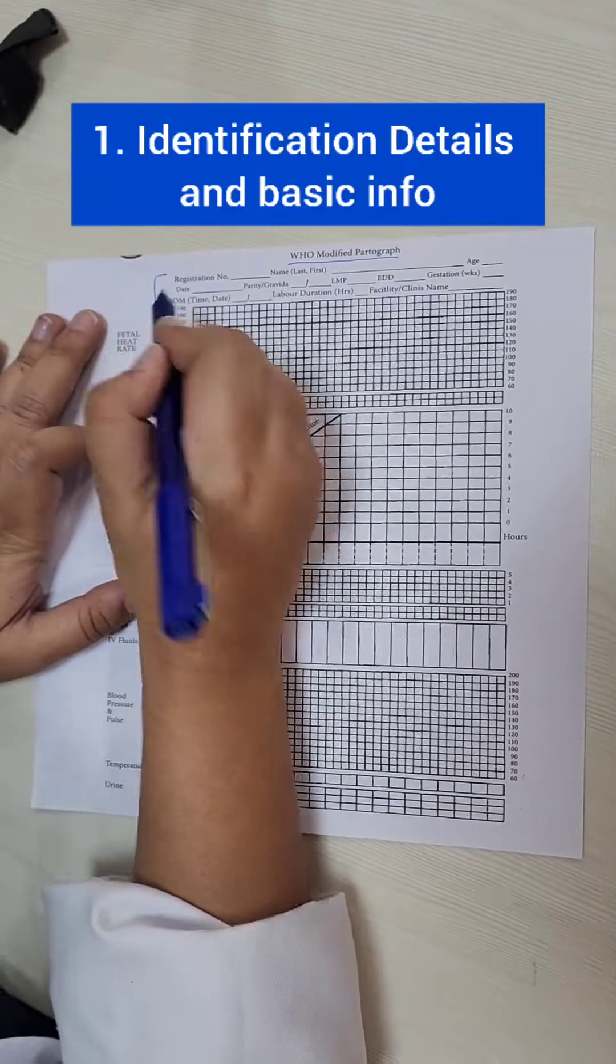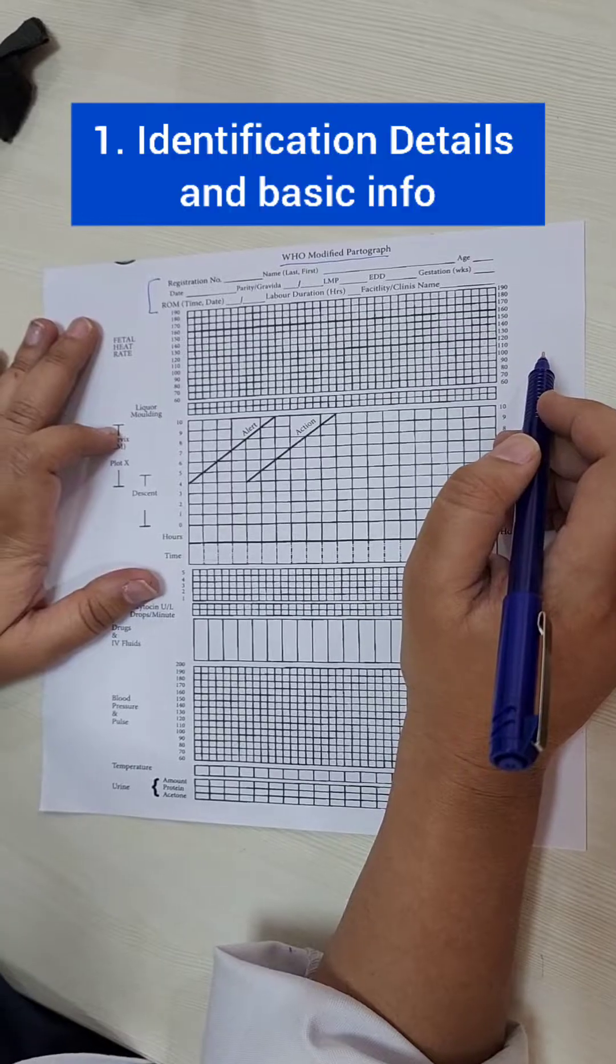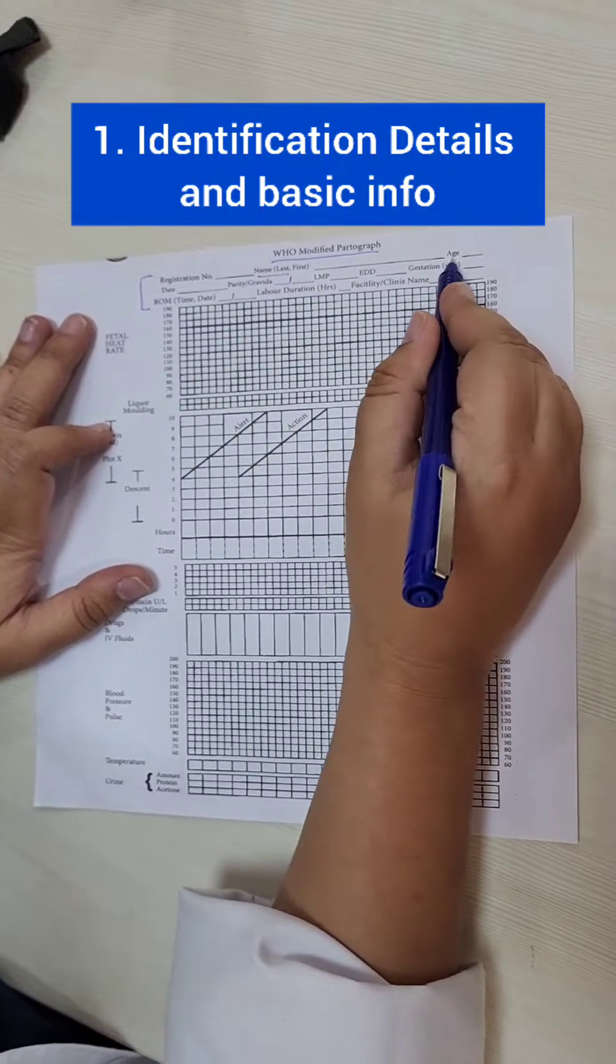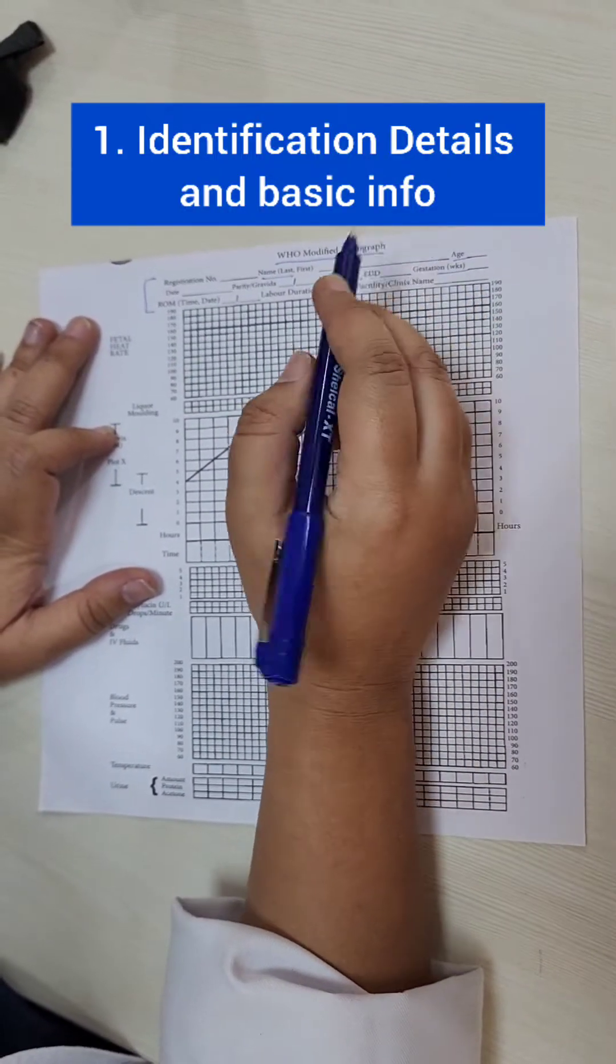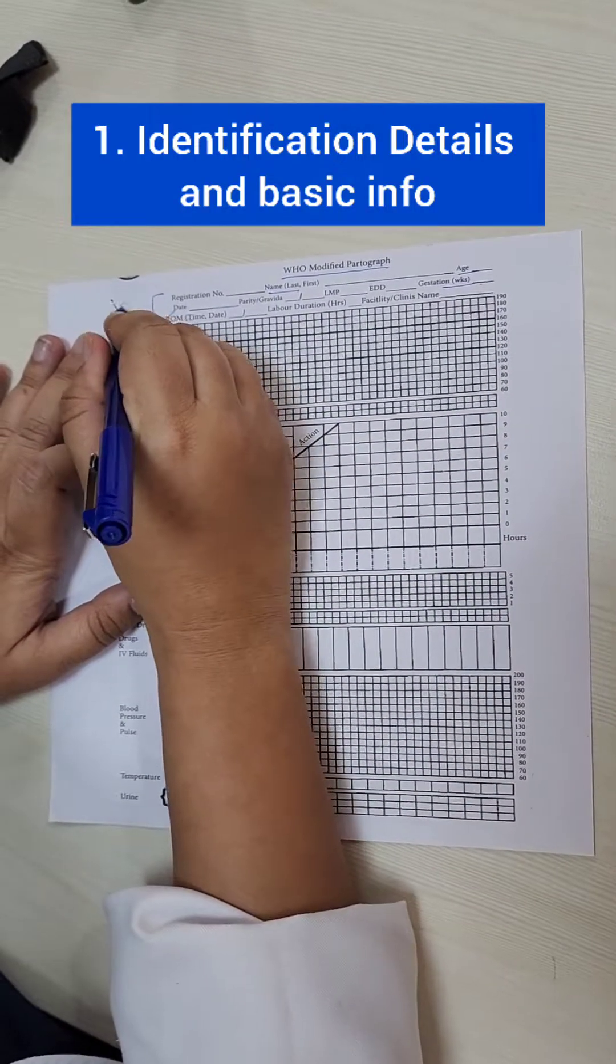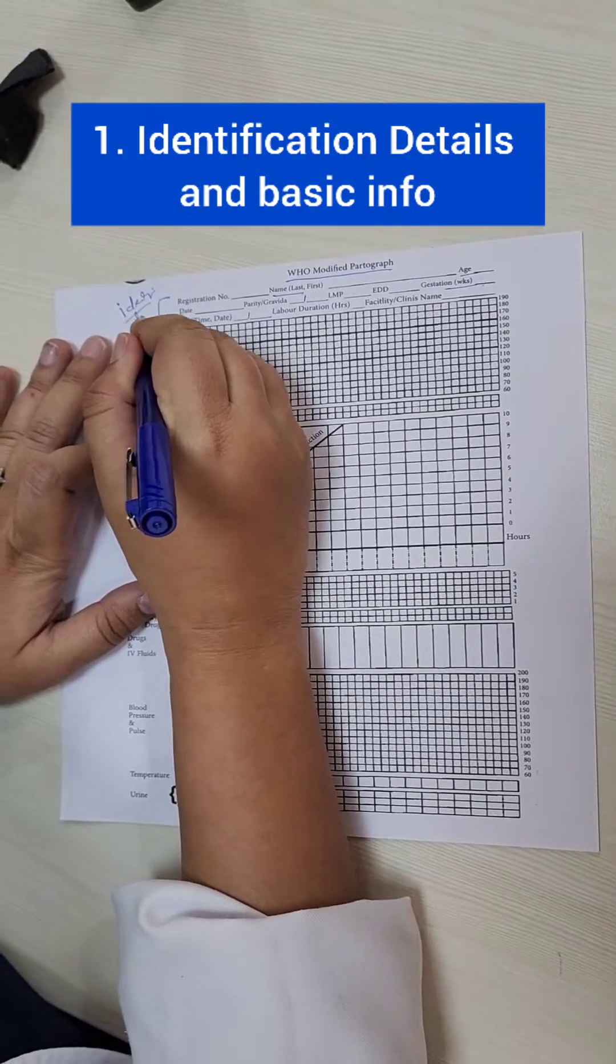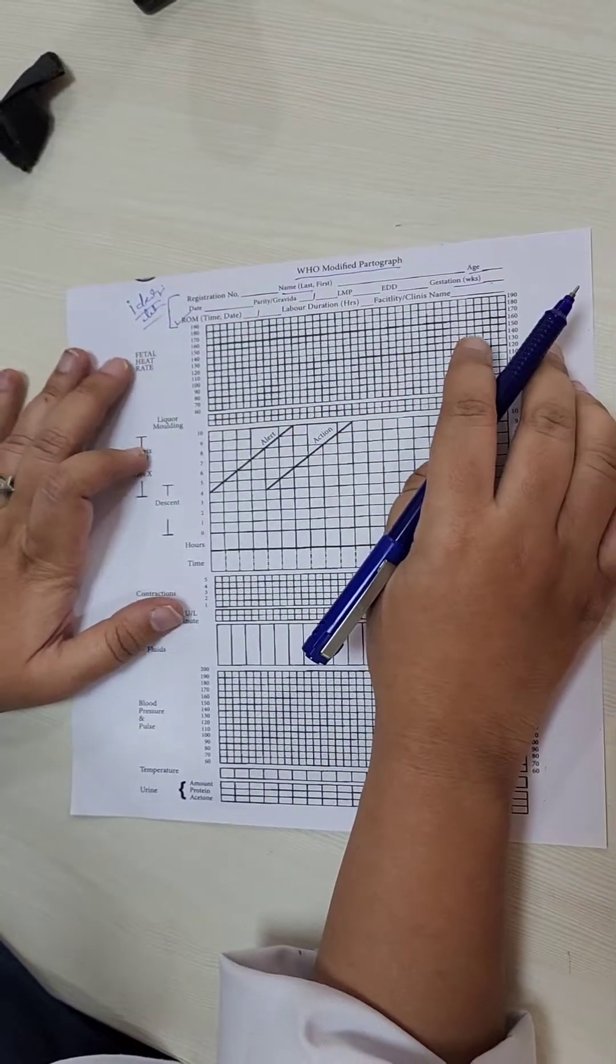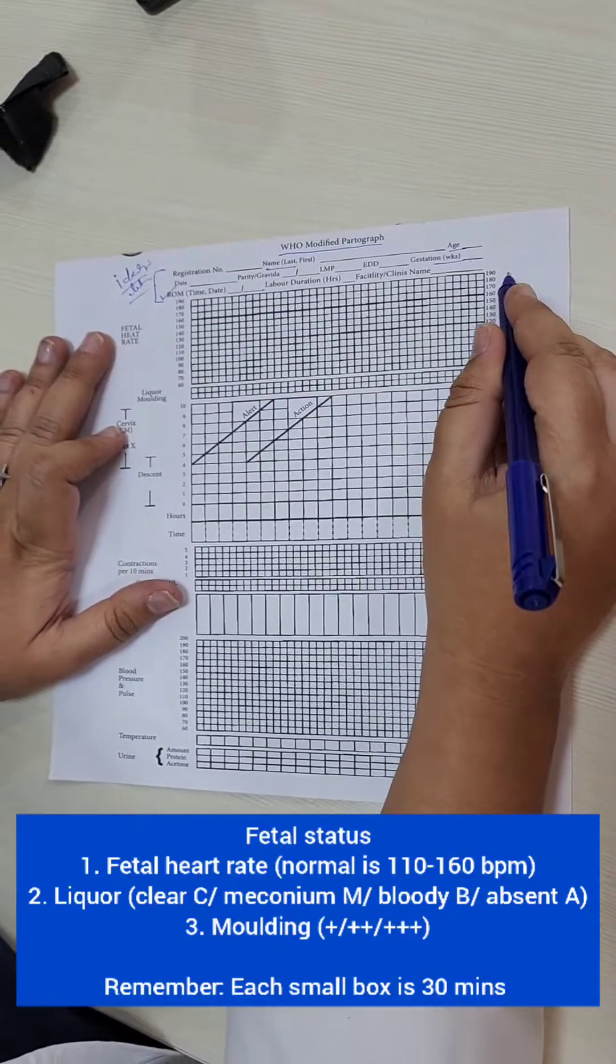The first part you can see is the identification details of the patient where you will have the patient's name, the age, the period of gestation, if she has ruptured her membranes at what time. So all this comes under identification details and basic details of the patient.